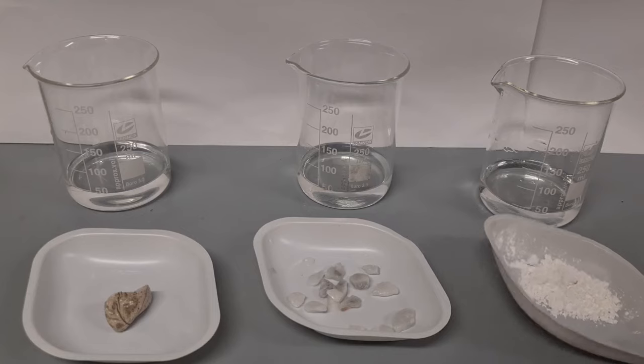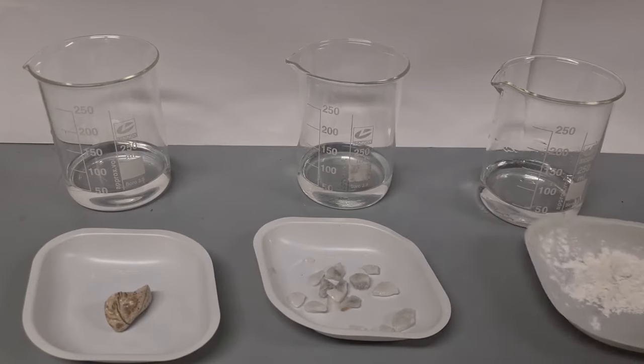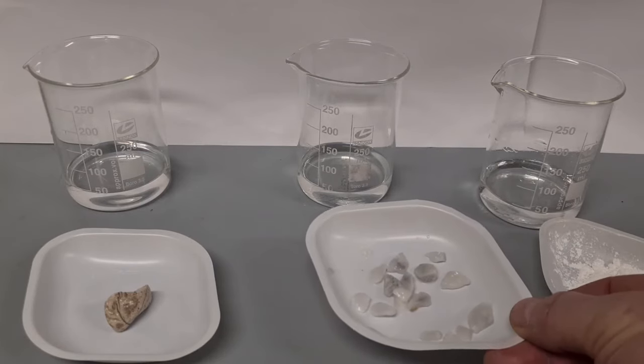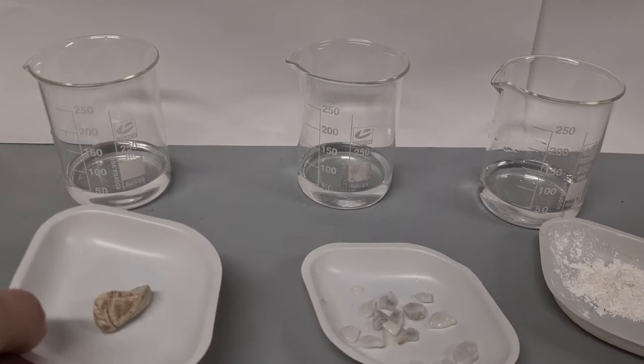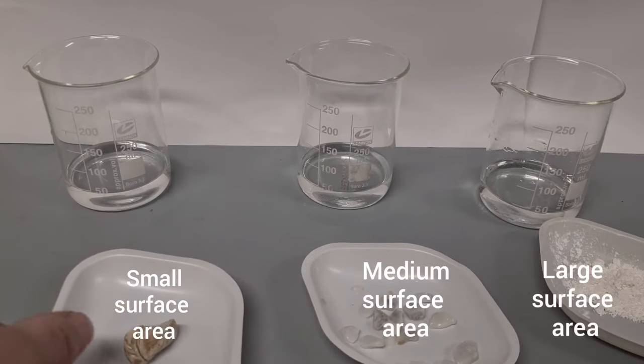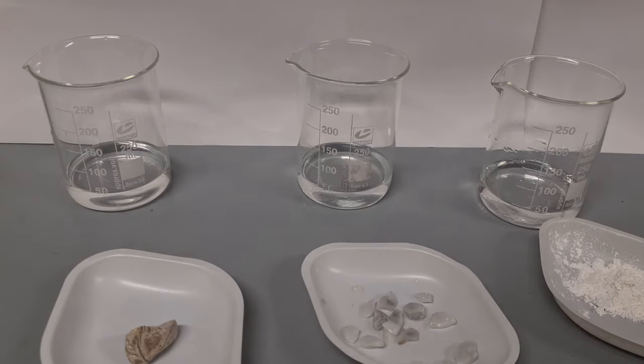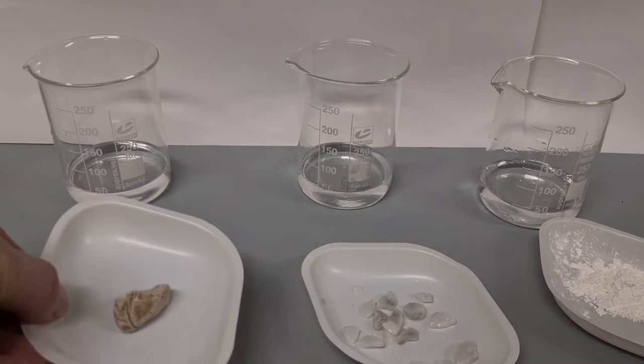The difference is this tray contains finely powdered calcium carbonate. This tray contains medium sized chips of calcium carbonate, and this tray contains a 10 gram piece of calcium carbonate. We want to examine the reaction rate or the speed of reaction when I add each sample of calcium carbonate to the acid.